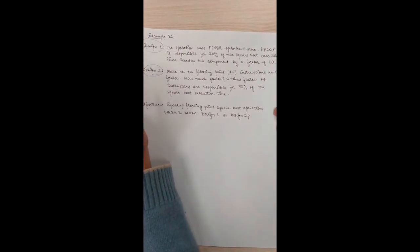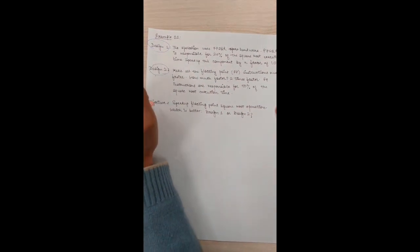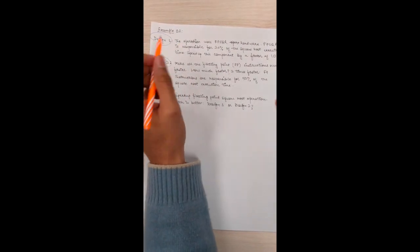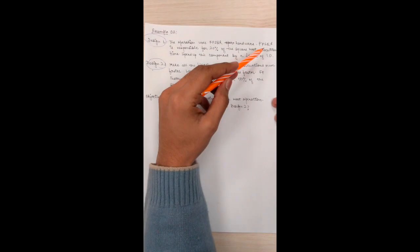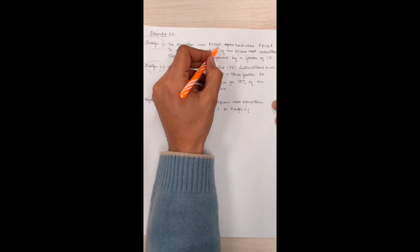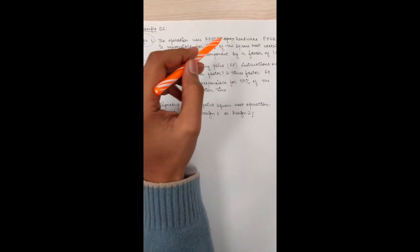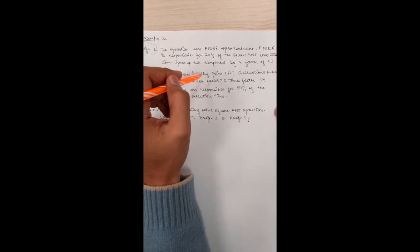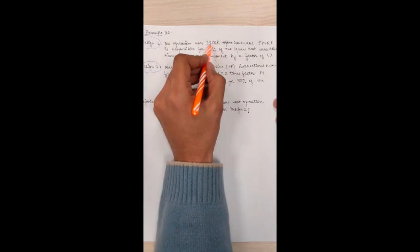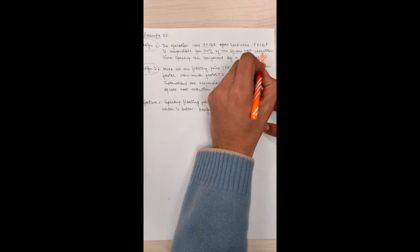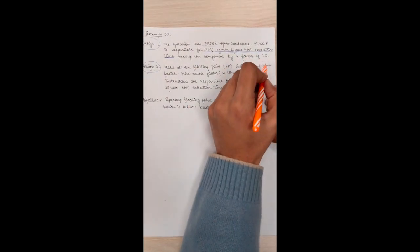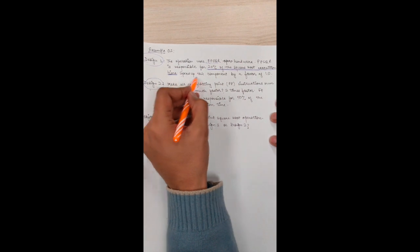Let's look into question 2 of basics of Amdahl's law. Here we have 2 designs: Design 1 and Design 2. And our objective is to increase the efficiency of a program. The question for Design 1 says the operation uses FPSQR software, and FPSQR is responsible for 20% of the square root execution time. Speed up this component by a factor of 10. First of all, let me tell you what FPSQR software is. It's actually a hardware which increases the efficiency of floating point instructions.